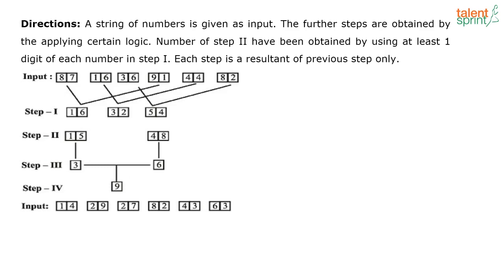You have 87 and 91 here. Using these two sets of numbers, you are arriving at 16. You have to find out what operation they are doing. The first step is fairly easy: 9 minus 8 gives 1, so that 1 is written here.